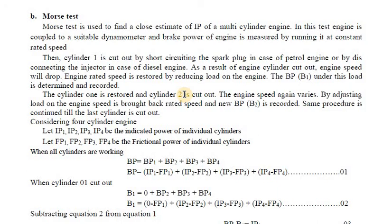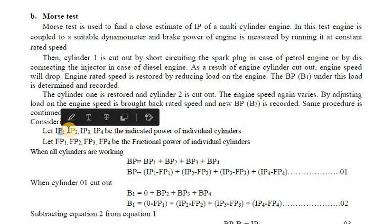Cylinder one is then restored and cylinder two is cut off. Again the engine speed varies, and by adjusting the load the speed is brought back to rated speed, and a new brake power B2 is recorded. In the same way, all four cylinders are cut off one at a time, and the brake powers B1, B2, B3, B4 are recorded. The indicated powers IP1, IP2, IP3, IP4 for each cylinder are then determined.